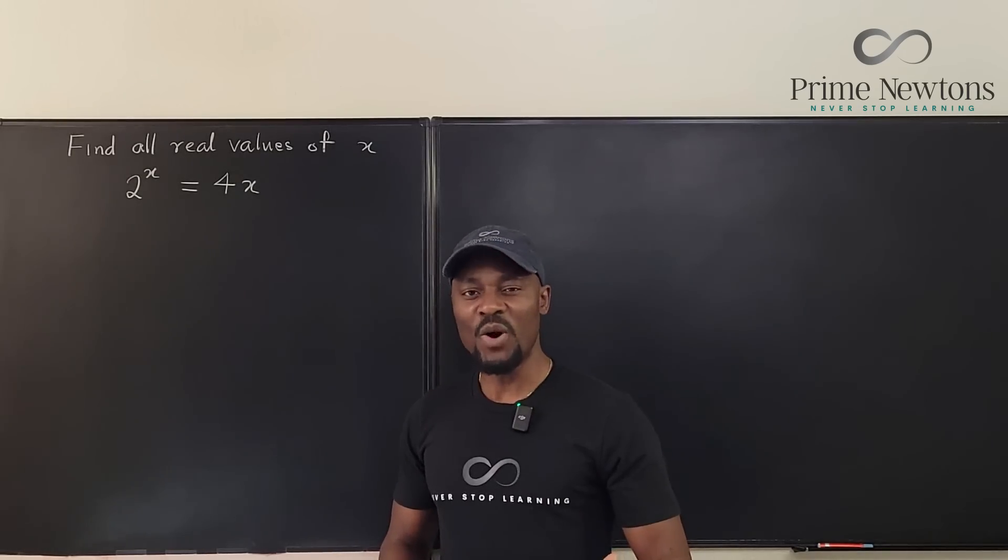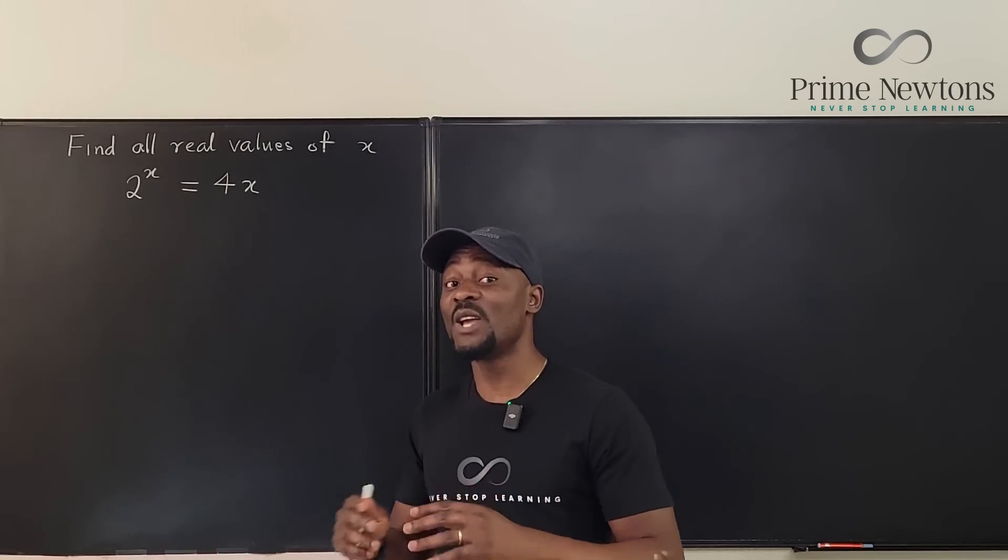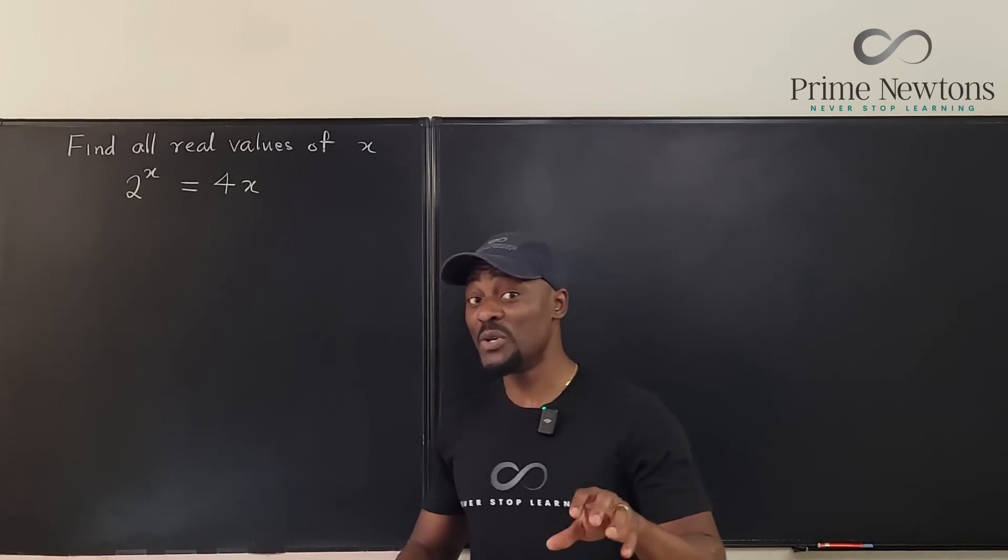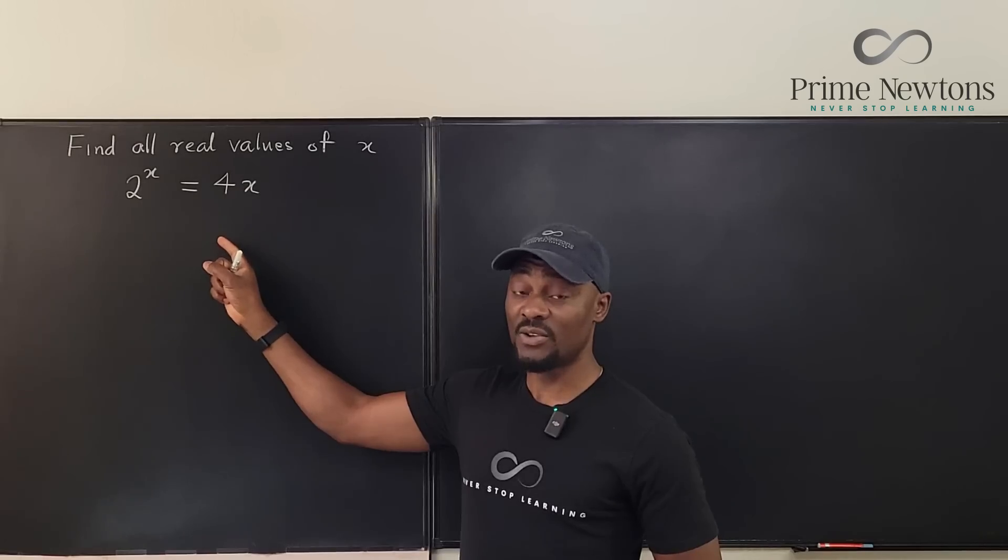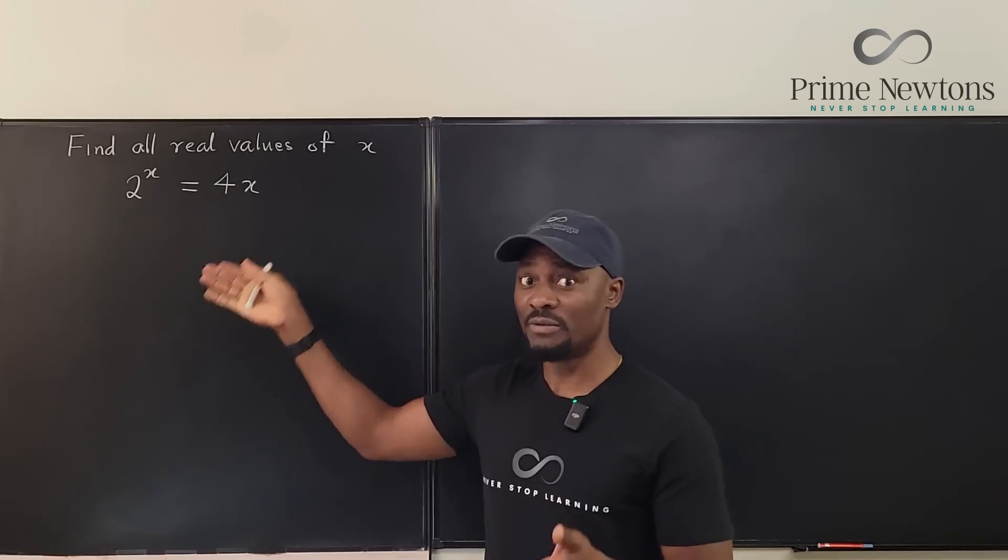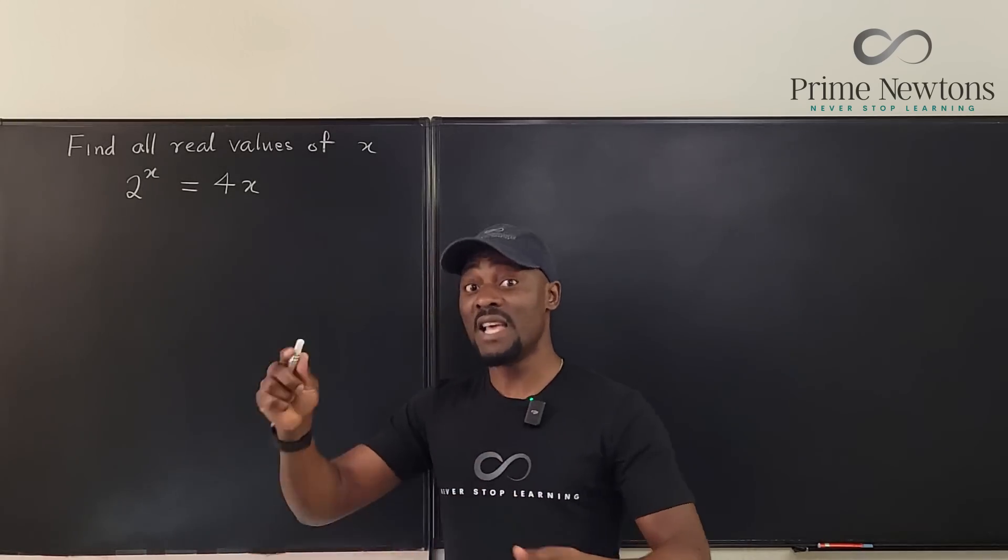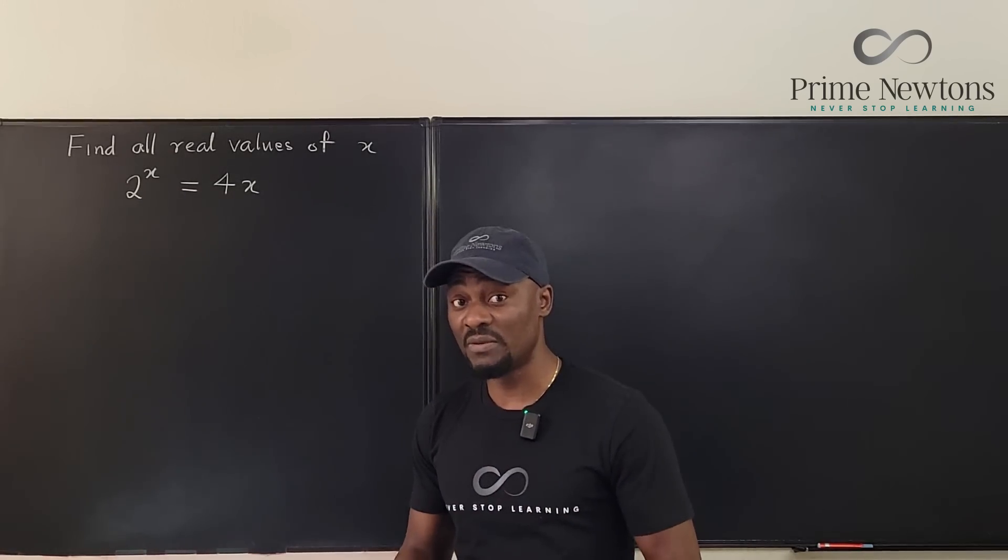But something came to my mind. What if I show how to compute the values I'm going to be getting without using Wolfram Alpha? So we're going to compute the second because this actually has two answers. One you can get by observation or by inspection, my favorite method. And the second method is actually by algebra and then we're going to end up using the Lambert W function.